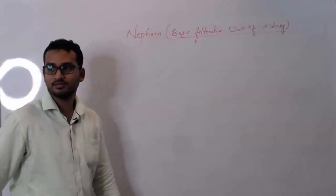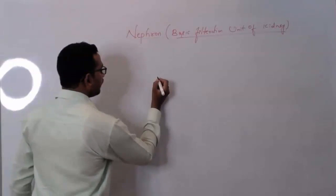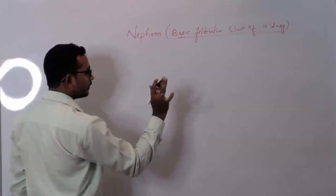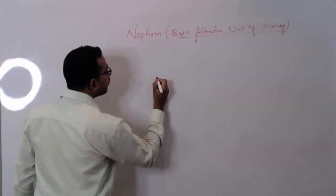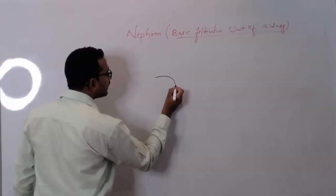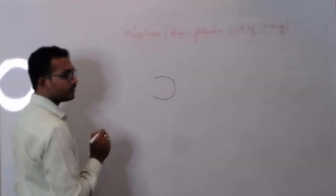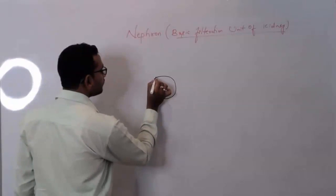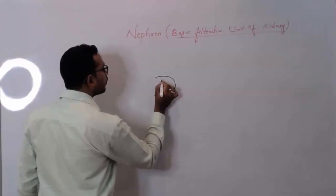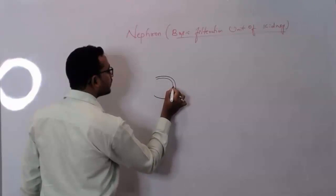Now let's start. The beginning step: draw the shape of C. Draw the shape of C. Draw the shape of C. Next, again draw one more shape of C.